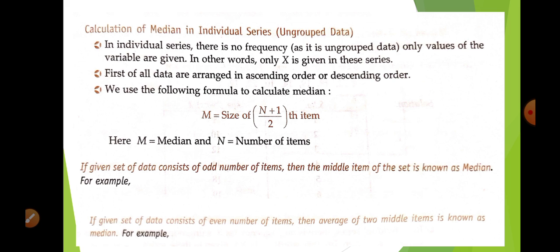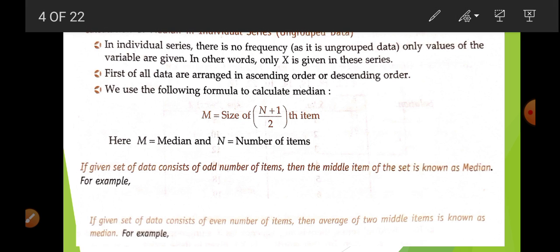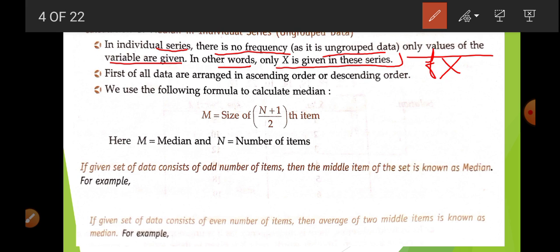First of all, calculation of median in individual series. Individual series is known as a series without frequency, or ungrouped data. There is no frequency, that is why it is known as ungrouped data. Only the values of the variable are given — in other words, only X is given in the series. There is no frequency. Remember.